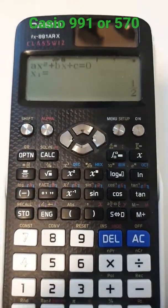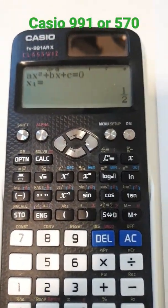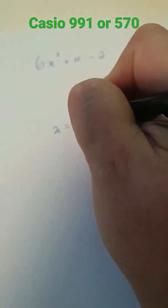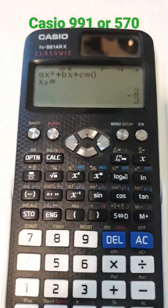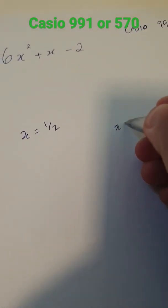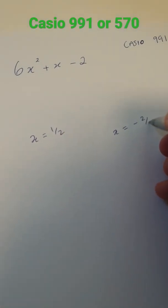And then when I press equals, I get my first answer, x equals 1 half. And then my second answer, x equals minus 2 thirds.